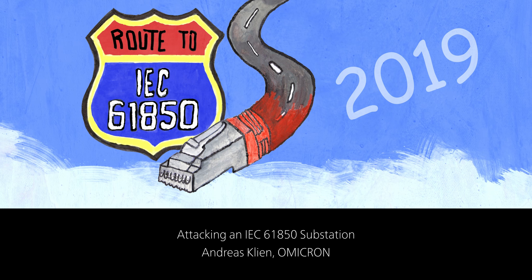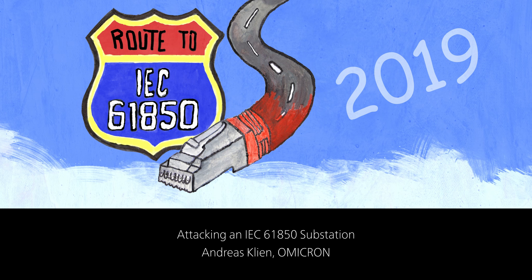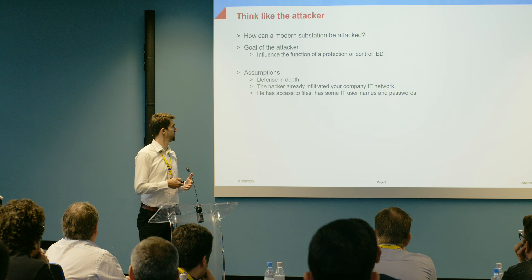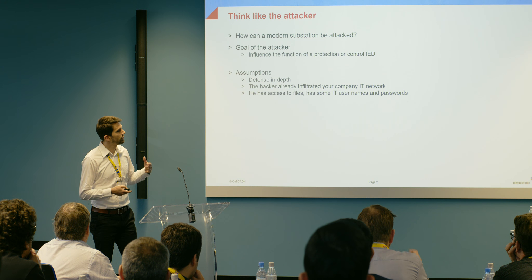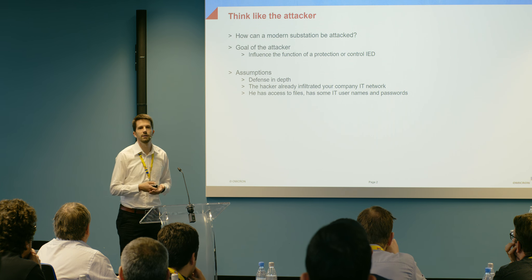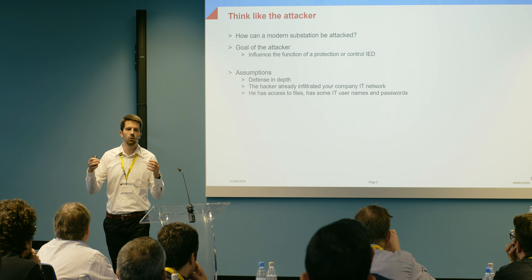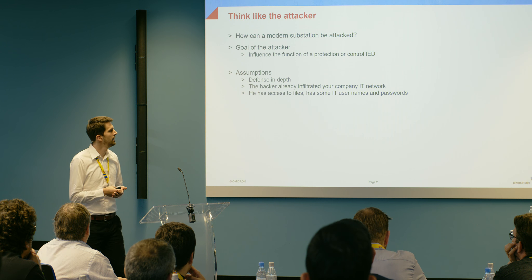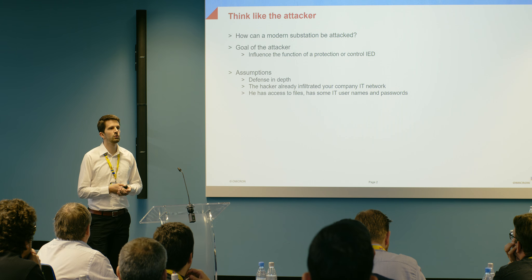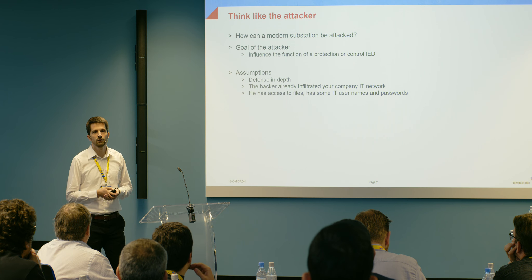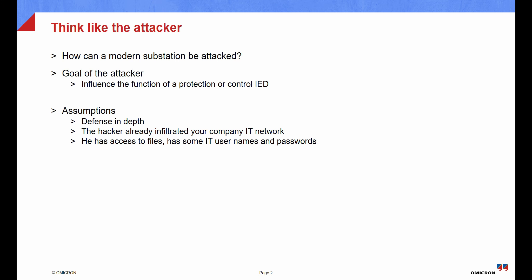Think like the attacker. How can a modern IEC 61850 substation be attacked? Our goal for today is to find out how this could be done, what are the attack vectors, how can he get into the substation. The goal of the attacker is he wants to influence the function of a protection, automation, or control IED — he wants to make it trip or not trip when it should, or open and close the breaker.